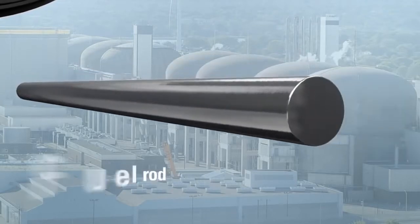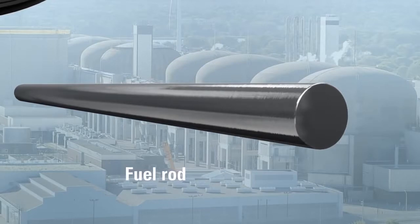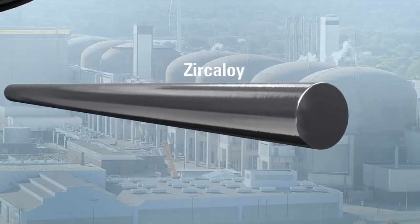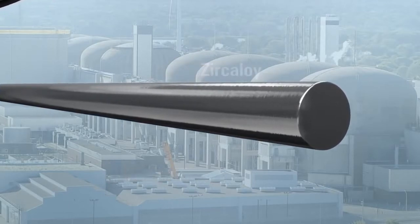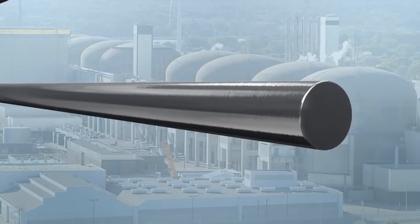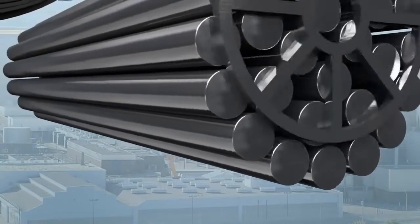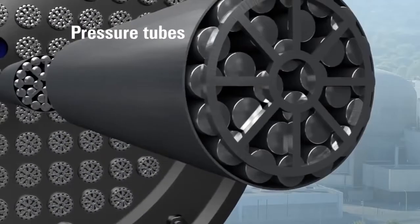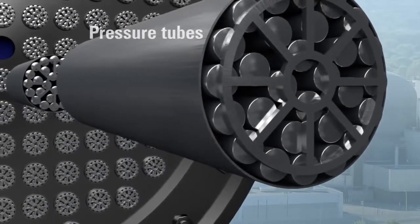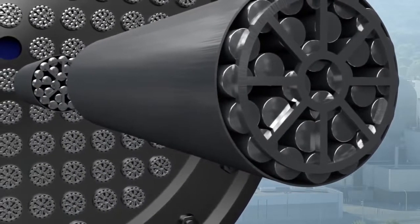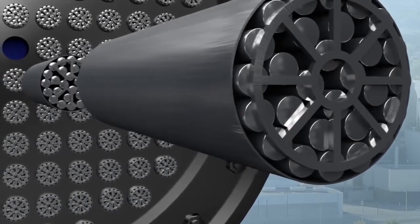The pellets are contained in rods, which form the second layer of containment. CANDU fuel rods are made of Zircaloy, a metal alloy extremely resistant to heat and corrosion. The rods are then loaded into pressure tubes, which are part of the heat transport system. This is the third layer of containment.